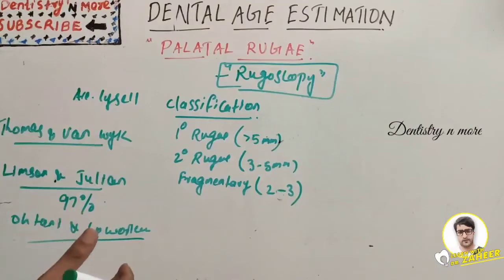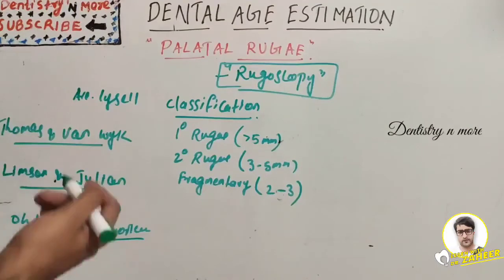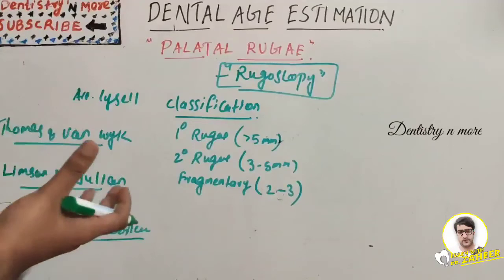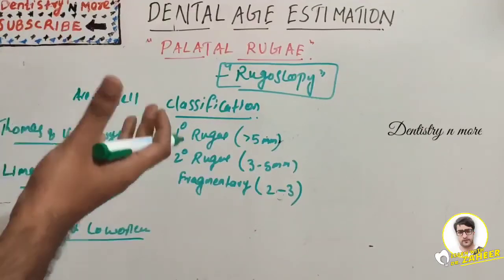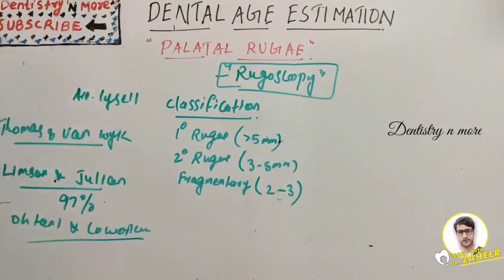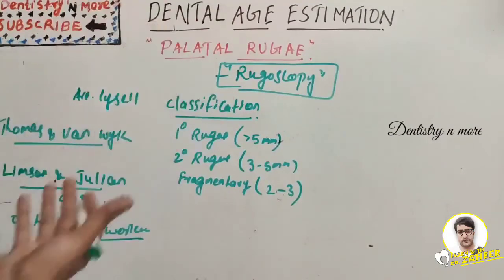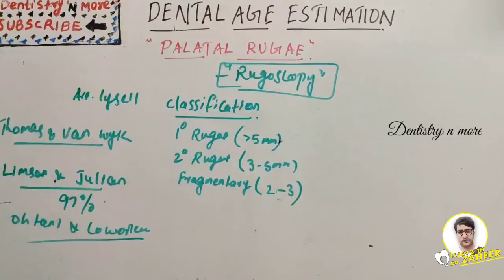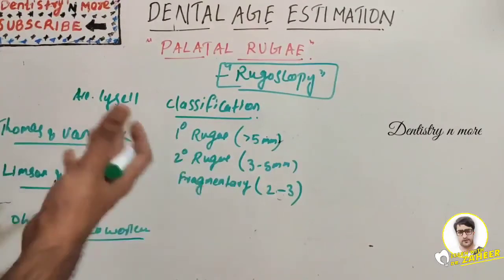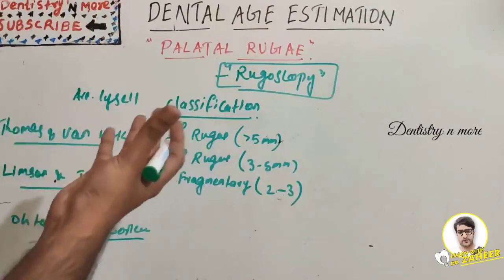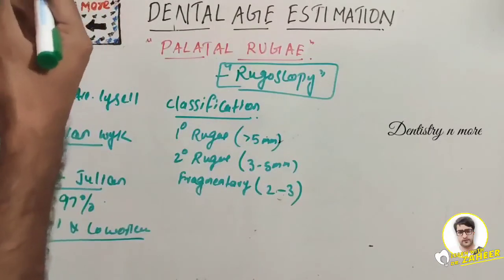The advantages of rugoscopy include: low cost and no need for complex instruments; racial group identification is possible; sex determination is quite easy; and palatal rugae do not change as a result of growth — they remain stable until death of the oral mucosa.